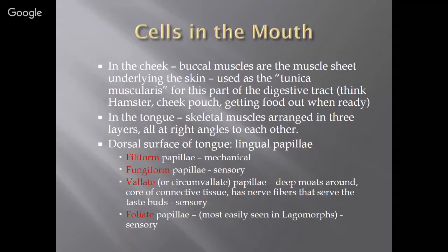The dorsal surface of your tongue is called the lingual papillae. Papillae means little fingers that stick up. There are four types of lingual papillae: filiform papillae, which are mechanical; fungiform papillae, which are sensory; valate or circumvalate papillae, which have little fingers with deep moats around them — a core of connective tissue with nerve fibers serving the taste buds, also sensory; and foliate papillae, most easily seen in lagomorphs (rabbits), which are sensory as well. So we have one mechanical type — filiform — and three sensory types: fungiform, valate, and foliate.